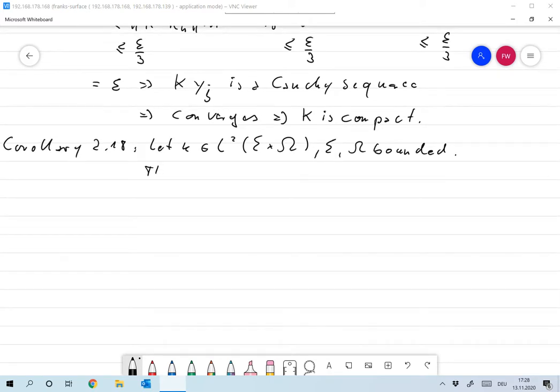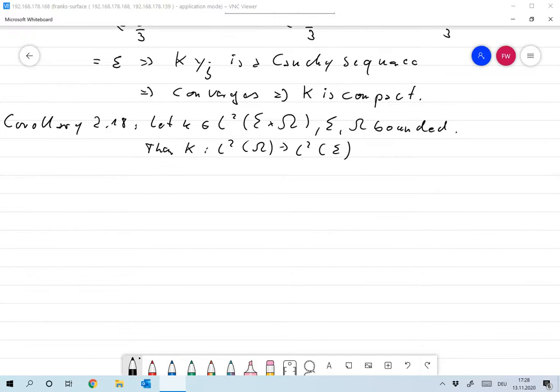Then define the operator capital K from L2 of omega to L2 of sigma in the usual way: K(u) of x is the integral over omega of k(x,y) times u(y) dy, and we've already looked at this.